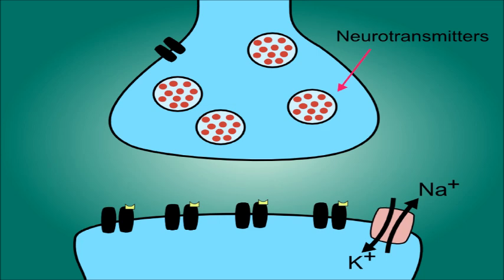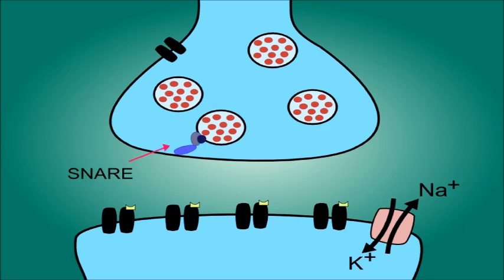On these synaptic vesicles are small proteins called snare proteins, and they bind to other snare proteins on the cell membrane.